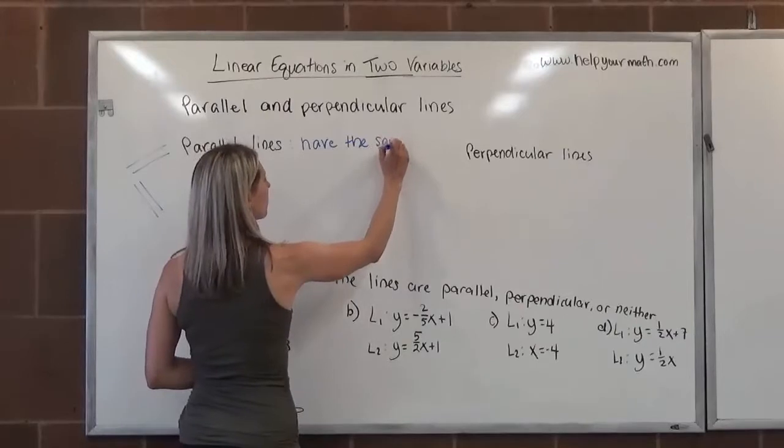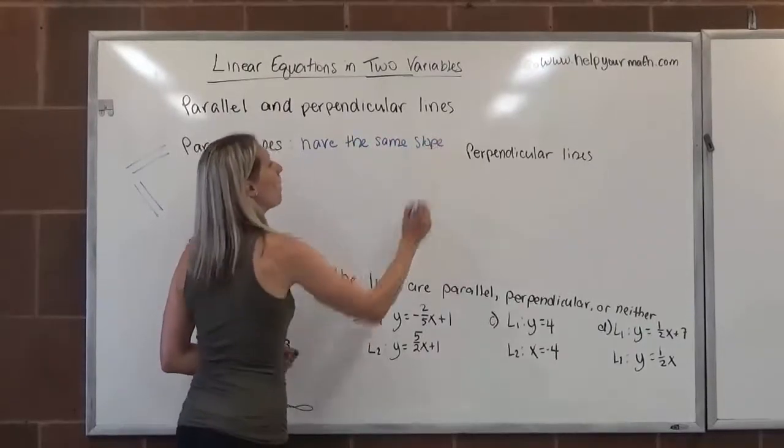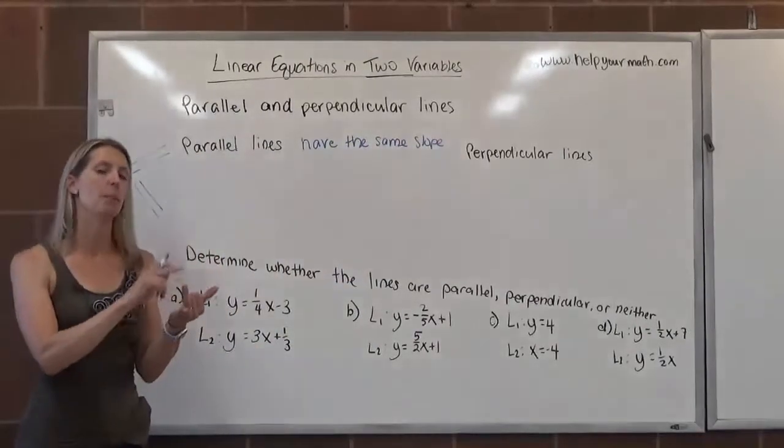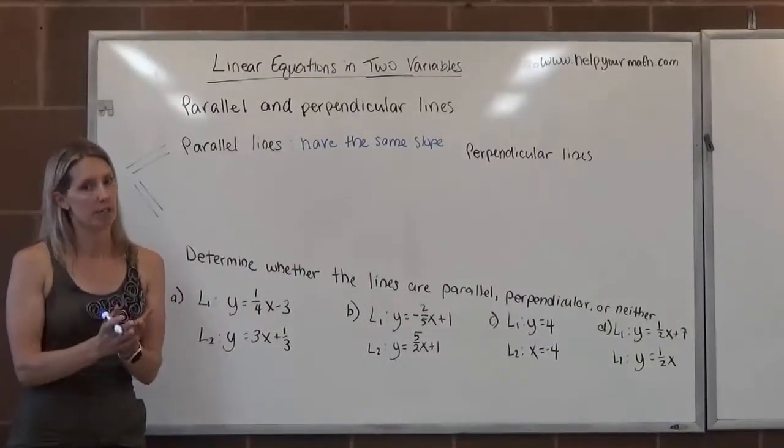And a little caveat: not only do they have the same slope, they also must have different y-intercepts. If they have the same slope and the same y-intercept, they're not parallel, they are the same line.